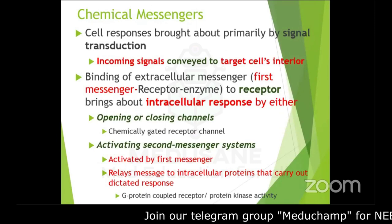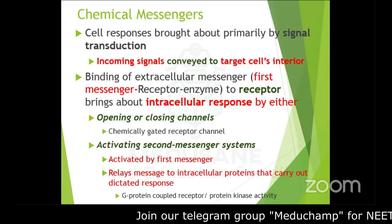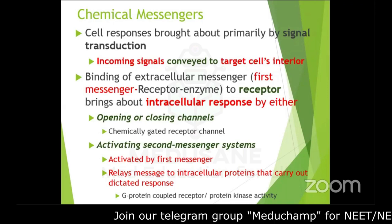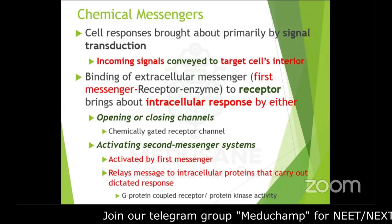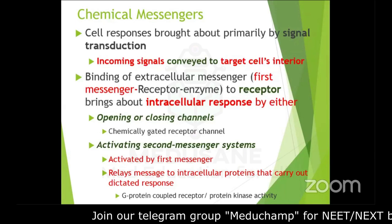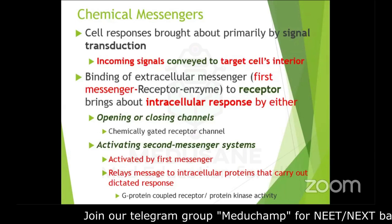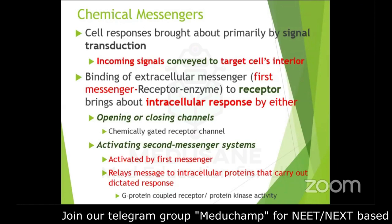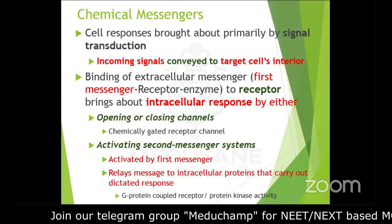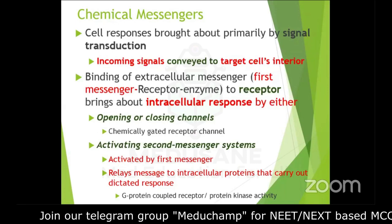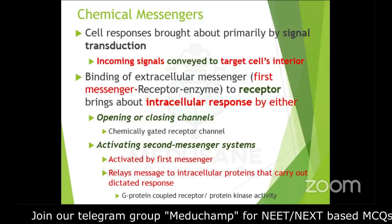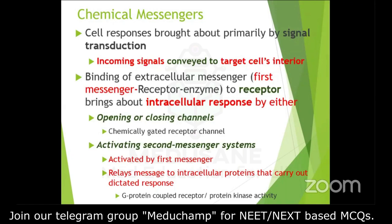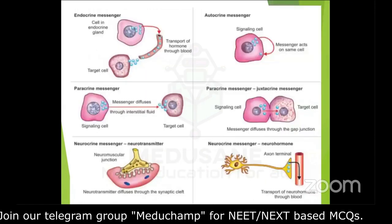Chemical messengers bring about communication between cells primarily by signal transduction — incoming signals are conveyed into the target cell's interior by forming first messengers or second messengers. Binding of the chemical substance to the receptor either causes opening or closing of ion channels (as in chemically gated receptors) or activates a second messenger system. Examples of second messengers include G-protein coupled receptors and protein kinase activity.